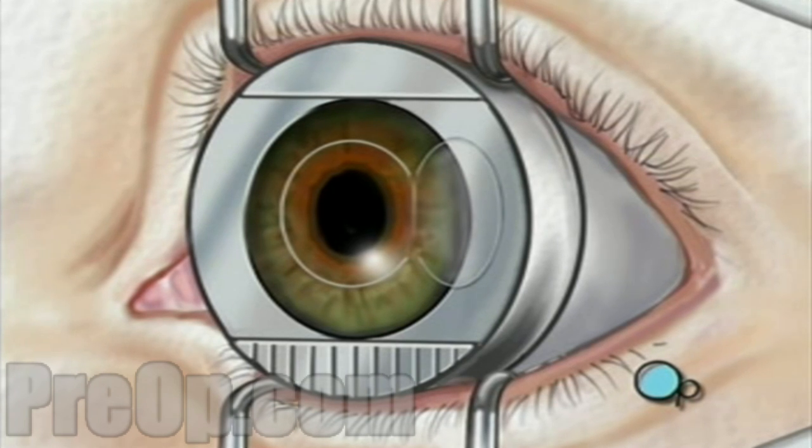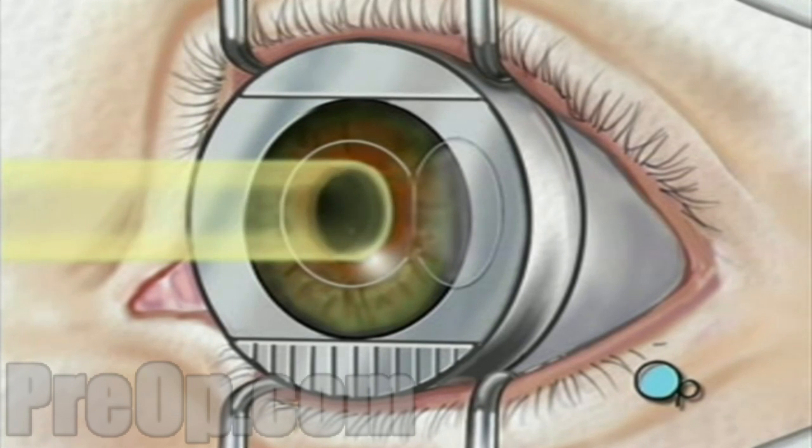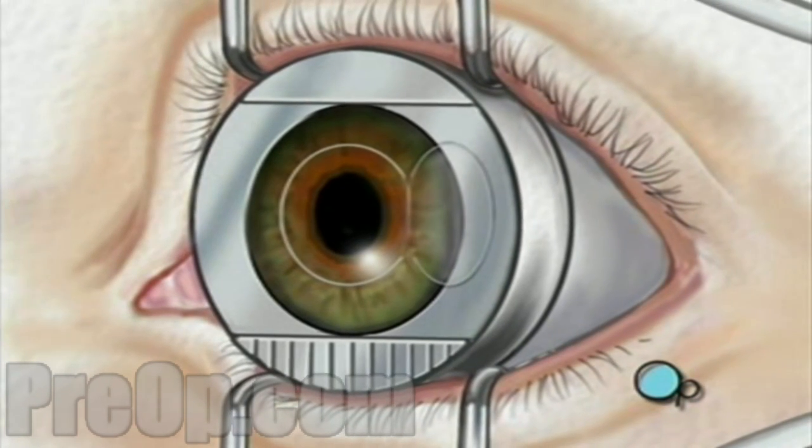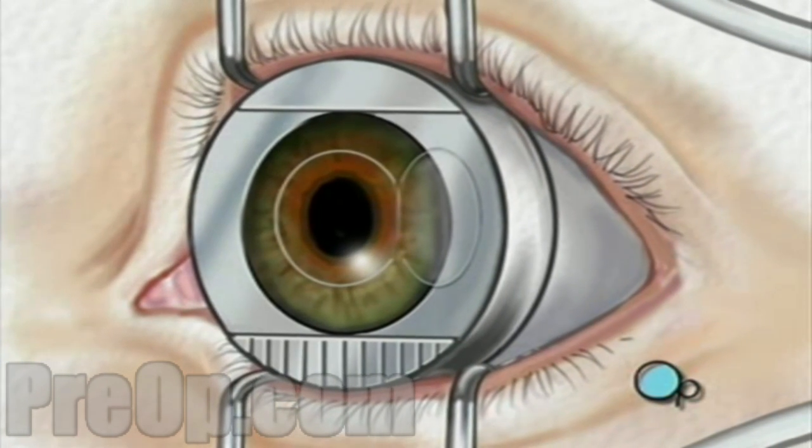Next, your doctor will use a computer to control pulses of cool laser light. These pulses will delicately remove microscopically thin layers of cells from the stroma. By removing tissue in this manner, your doctor will tailor the new shape of your cornea according to the exact nature of your vision problem.